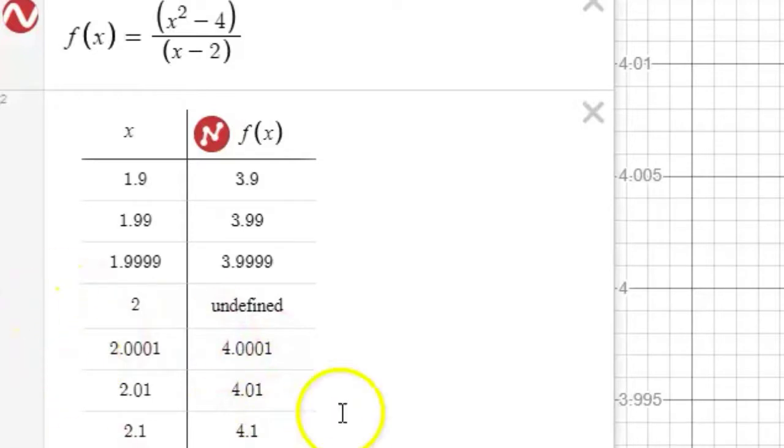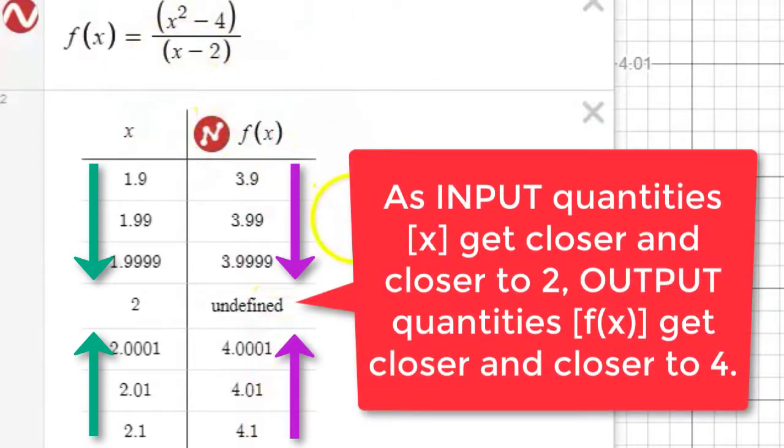And we also see that with values of x that are just slightly bigger than 2. We see that the output quantities are just slightly bigger than 4. So we could conclude, based on this evidence, that as input quantities get closer and closer to 2, the function output quantities get closer and closer to 4.